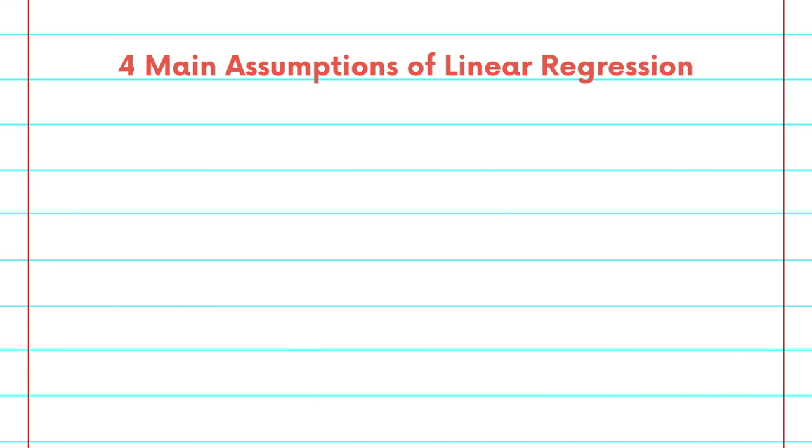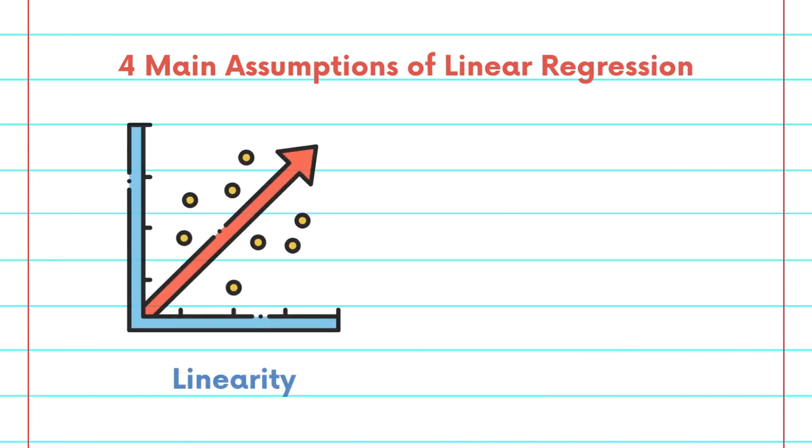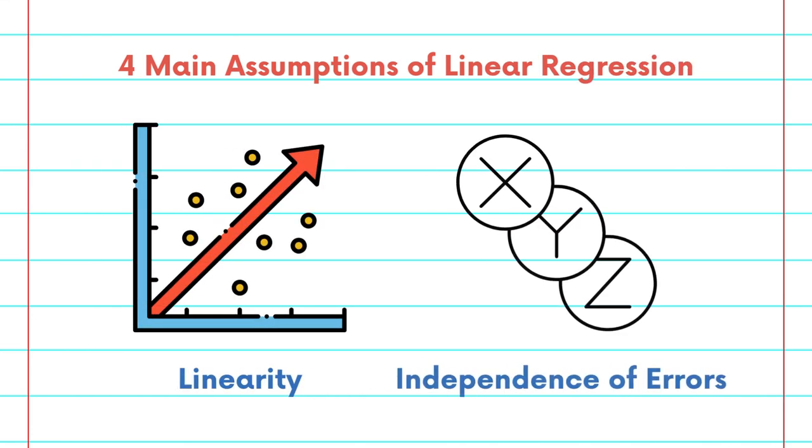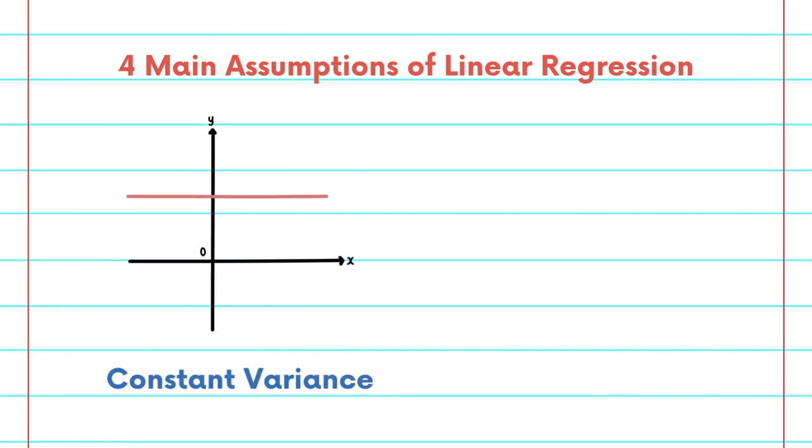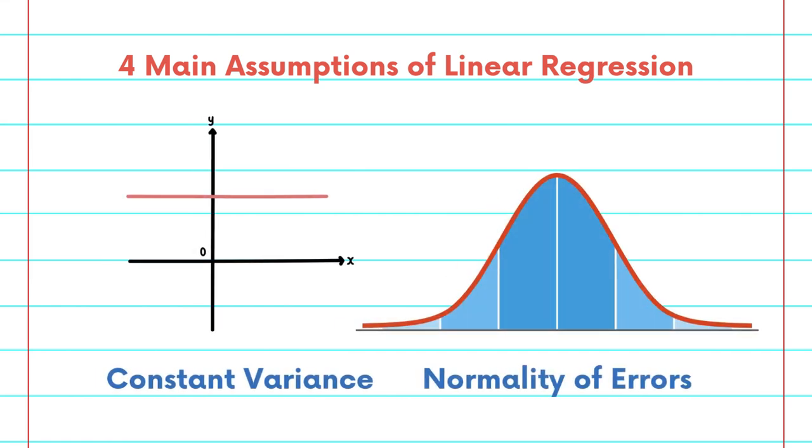There's four main assumptions for linear regression which are the linearity, the independence of errors, constant variance, and also the normality of errors.